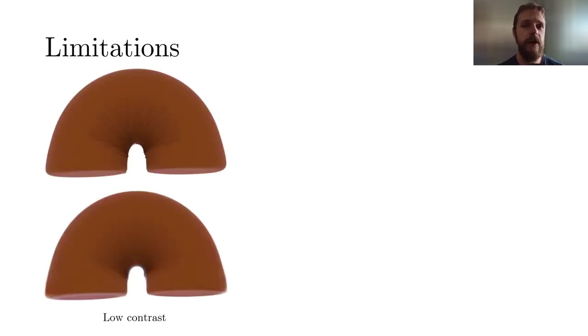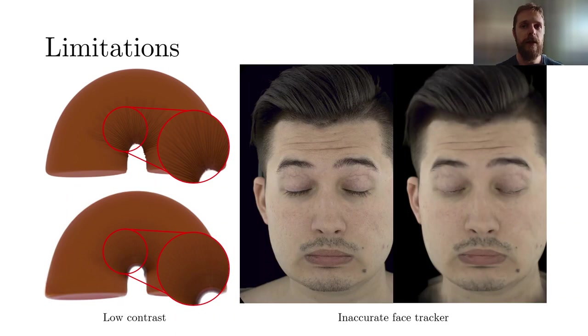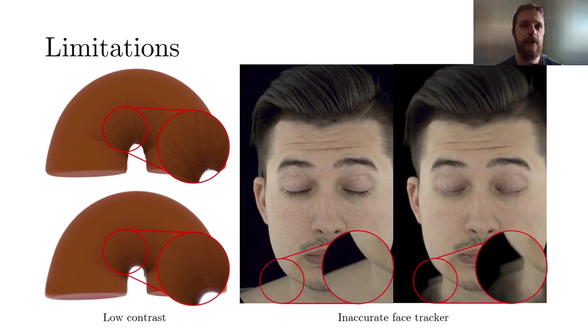BlendFields has two noticeable limitations. Firstly, it struggles with convergence when learning wrinkles with low contrast relative to the object's color. Secondly, it relies on an accurate face tracker. If the tracker is inaccurate, BlendFields cannot render realistic avatars or produces ghostly artifacts. However, since BlendFields is trained in a low data regime, the output from the external tracker can be fixed with low effort.